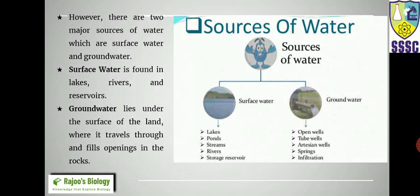Sources of water can be classified into two categories: surface water and groundwater. Surface water includes lakes, ponds, streams, rivers, and storage reservoirs. Groundwater includes open wells, tube wells, artesian wells, springs, and infiltration — where water is allowed to percolate into the ground to replenish the water table.